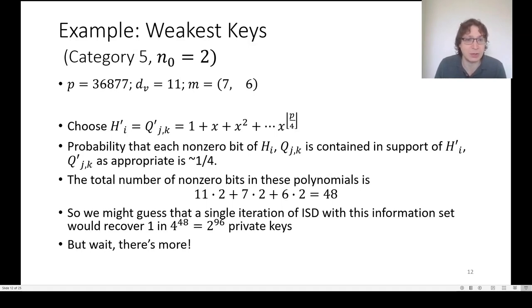The total number of nonzero bits that need to fall in this quarter of the coefficients is 11 times 2 plus 7 times 2 plus 6 times 2, which is 48. We might guess that a single iteration of information set decoding with this information set would recover 1 in 4 to the 48 or 1 in 2 to the 96 private keys. And this would already be an attack, but there is in fact more.